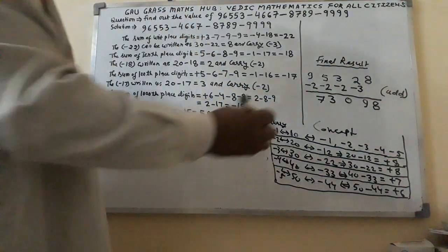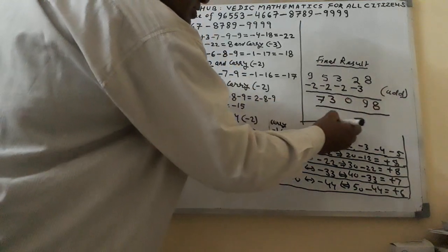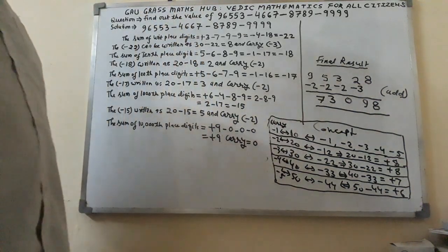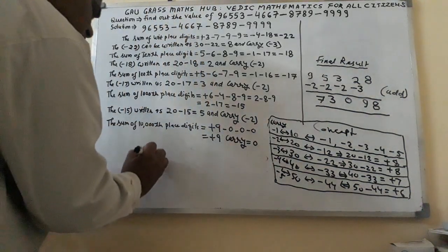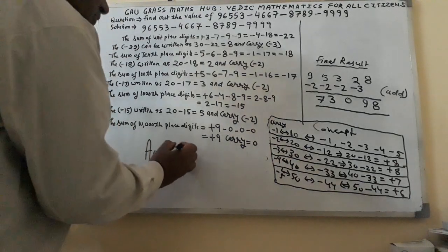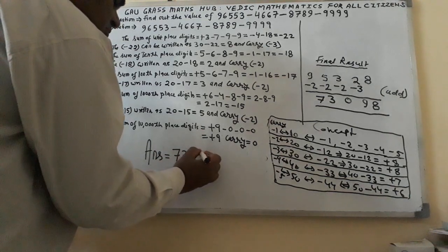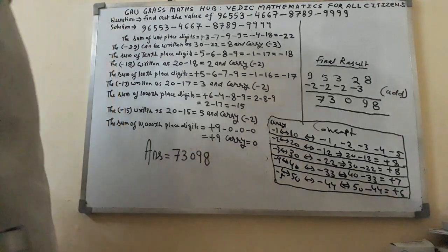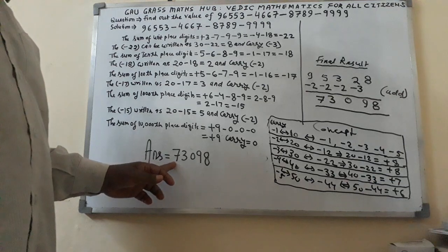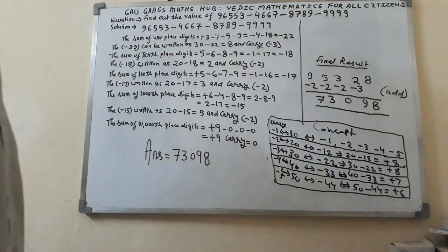The answer you have got: this is the concept. The correct answer you have got here — answer is equal to 73,098. The correct answer will be 73,098.